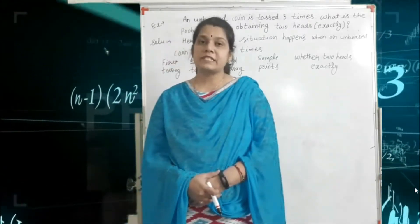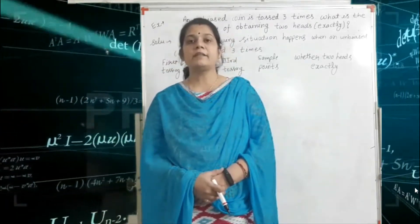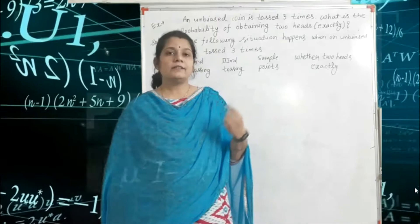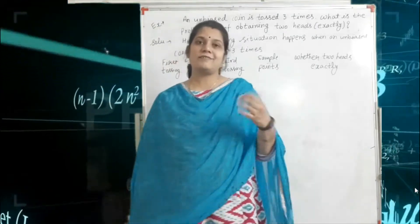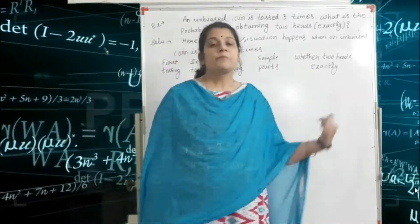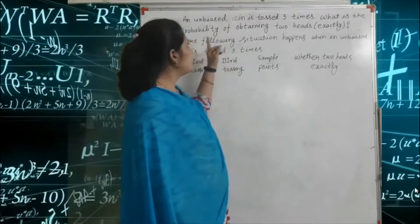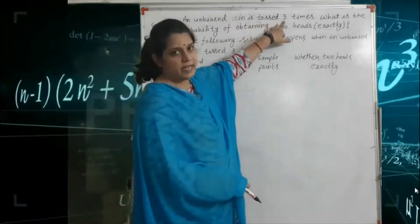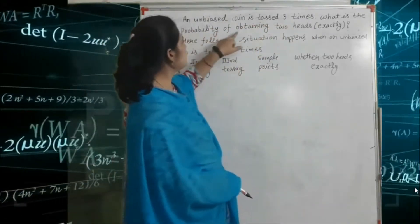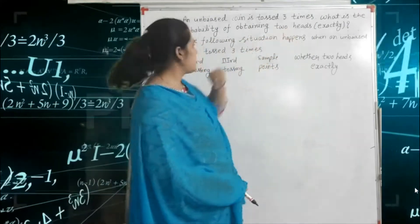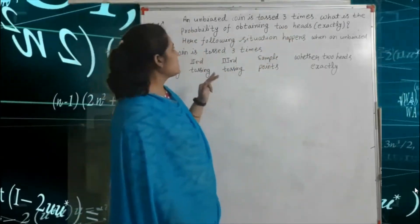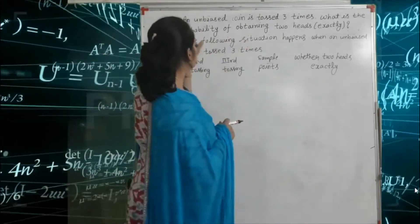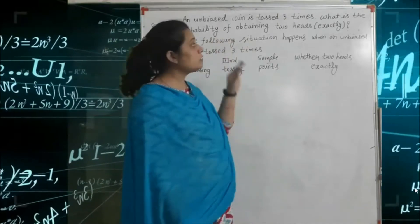We have already seen in our previous lecture how we find the total probability for tossing a die or coin, or with black and white balls. So this is again the example: an unbiased coin is tossed three times. What is the probability of obtaining exactly two heads?